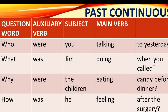In the past continuous, the auxiliary verb is 'was' or 'were', and the main verb also has the -ing form. For example: Who were you talking to yesterday? What was Jim doing when you called? Why were the children eating candy before dinner? How was he feeling after the surgery?